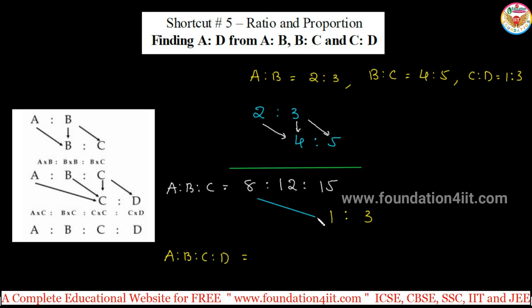First we multiply this 8 to 1. 8 into 1 is 8. Again 12 into 1, 12 it is. Again 15 into 1 is 15. So I wrote here a logic here: A into C, B into C, and C into C.